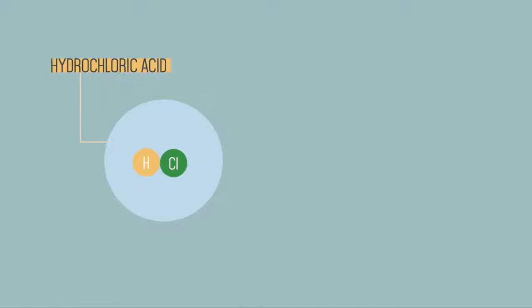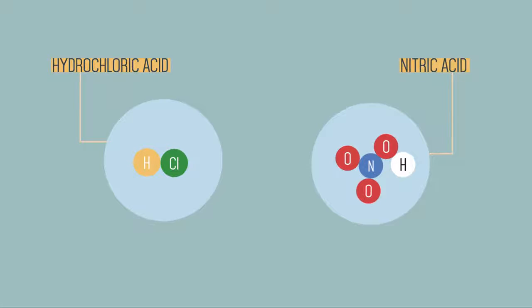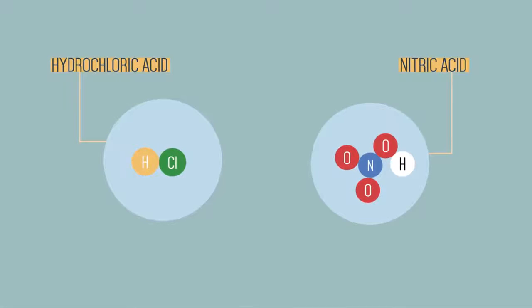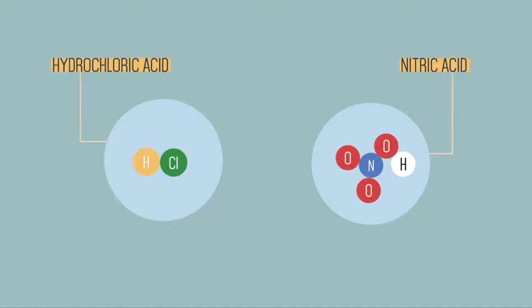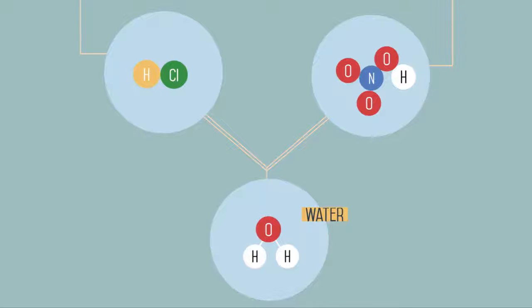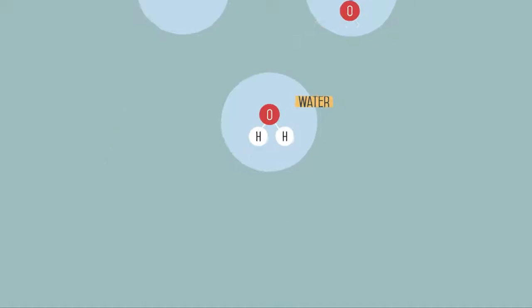Hydrochloric acid found in your stomach and nitric acid are also examples of strong acids. We have established in our video what makes something acidic, that acids react with water to produce hydrogen ions or more strictly speaking hydroxonium ions.